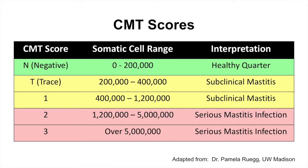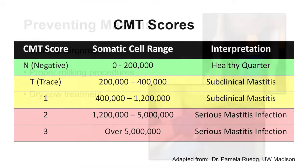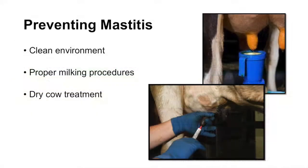Once a cow is identified through the CMT, we're able to go on to the next step of determining what's causing that particular mastitis infection. Now that we've learned what mastitis is and how to detect it, we really need to talk about prevention — because if we can prevent the disease from ever occurring, we don't have to get to the point of treating it.